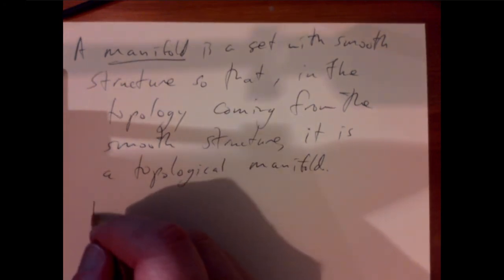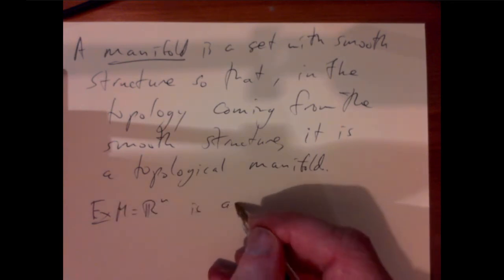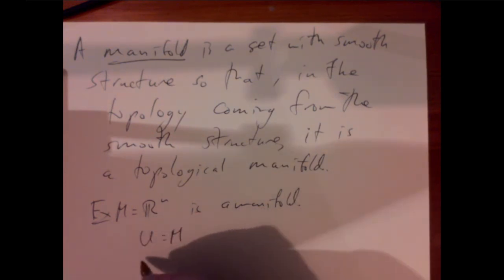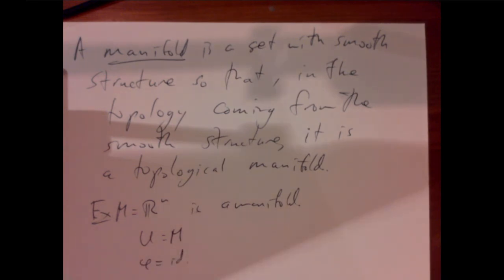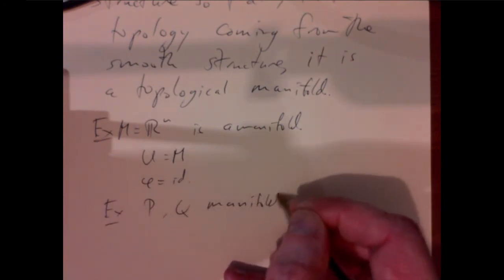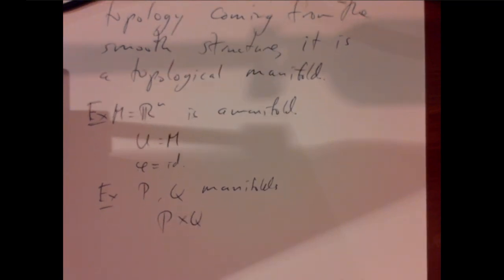The trivial example is Euclidean space itself: R^n is a manifold where we let U be all of R^n and phi be the identity map. If P and Q are manifolds, then P cross Q is a manifold — we take products of charts, and one can check all necessary properties: products of Hausdorff spaces are Hausdorff, and so on.